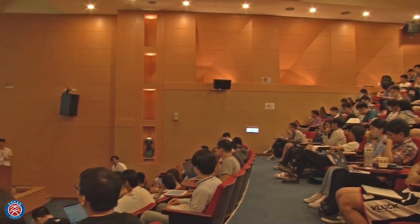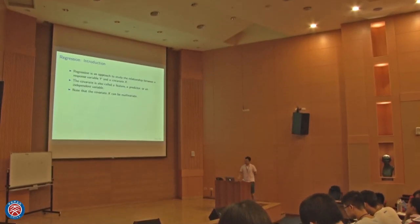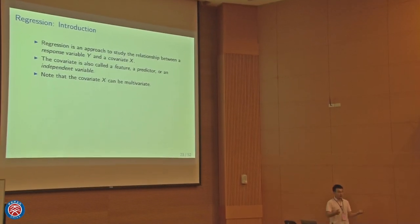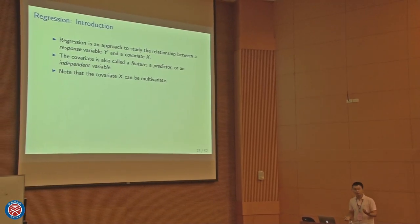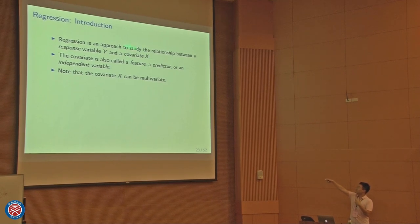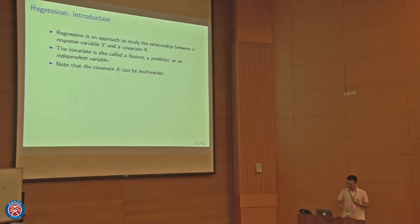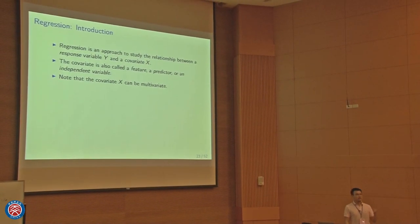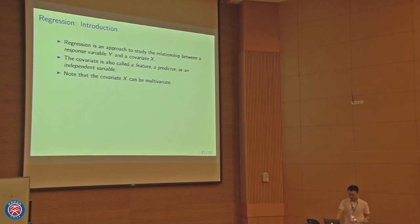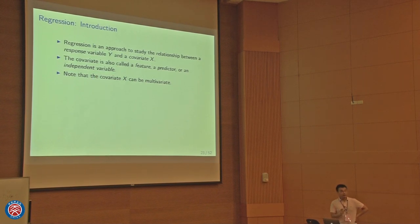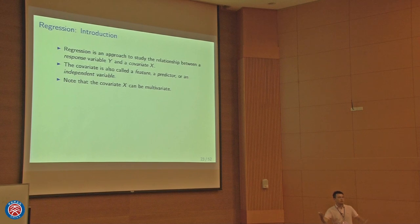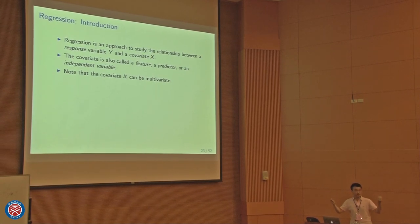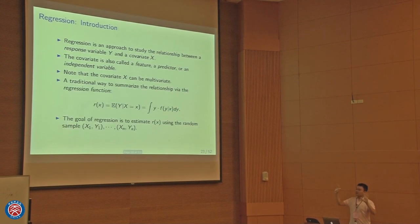Now let's move on to regression. Regression is an approach to study the relationship between two variables, x and y. The y variable is called a response variable, and x is called a covariate — sometimes also called a feature, predictor, or independent variable. The covariate x could be multivariate or even high-dimensional, but here we assume one-dimensional for simplicity.